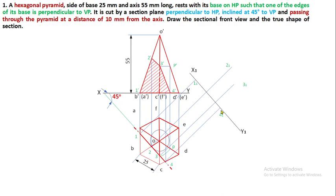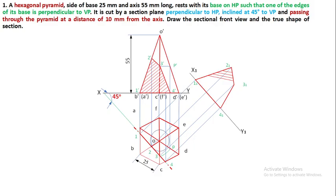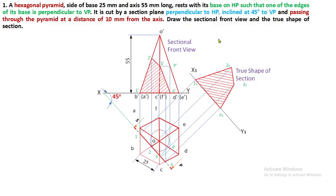Now join all these points — 1, 2, 3, 4 — of the true shape of section by means of continuous thick lines, then do hatching with thin lines at uniform distance between them. This completes the sectional front view and the true shape of section.